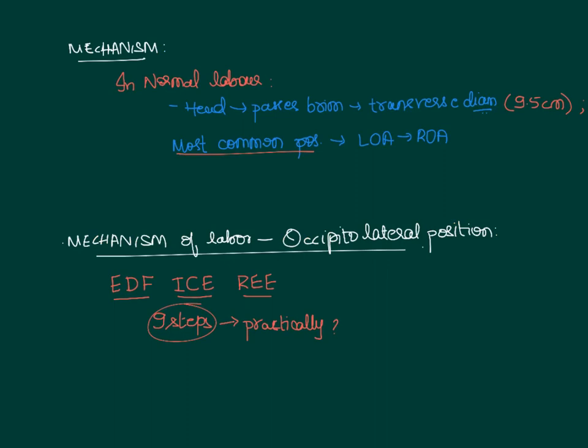Now let's start with the mechanism of labor. Let us study about the steps involved in the mechanism of labor. Usually the occipito-lateral position will be the most common one, so we will describe the steps involved in this position itself. The first is engagement, second will be descent, third will be flexion, fourth will be internal rotation, fifth will be crowning, sixth will be extension, seventh is restitution step, eighth is external rotation step, and finally the ninth step will be the expulsion of the trunk. Remember that these nine steps are theoretically different, but practically some of the steps might undergo simultaneously itself.